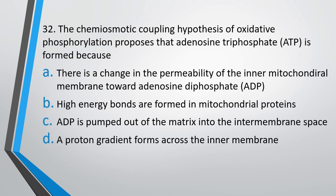Question number 32. The chemo-osmotic coupling hypothesis of oxidative phosphorylation proposes that ATP is formed because there is: (A) a change in permeability of the inner mitochondrial membrane towards ADP, (B) high energy bonds formed in mitochondrial proteins, (C) ADP pumped out of the matrix into the intermembrane space, (D) a proton gradient that forms across the inner membrane. The correct answer is option D — a proton gradient forms across the inner membrane, which is responsible for ATP synthesis.